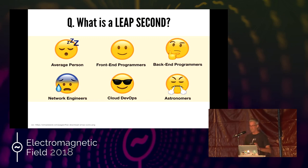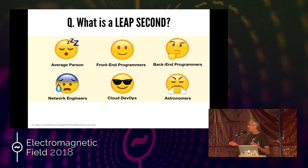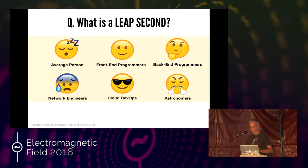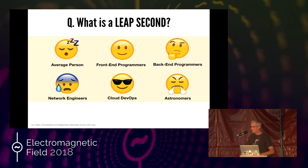On the whole, nobody cares. The average person in the street has probably never even heard of it. But if you're working with computers, it's one of these things that comes up again and again. Front end programmers really don't care. Back end engineers have always got a horror story of some kind, but it's the network engineers that really feel it. They're the ones booking holiday in June and December because they don't want to be around. Cloud DevOps has gone a little different now — they've got their smearing thing, so they're happy. The astronomers are hands off my leap second, quite vehement about that.